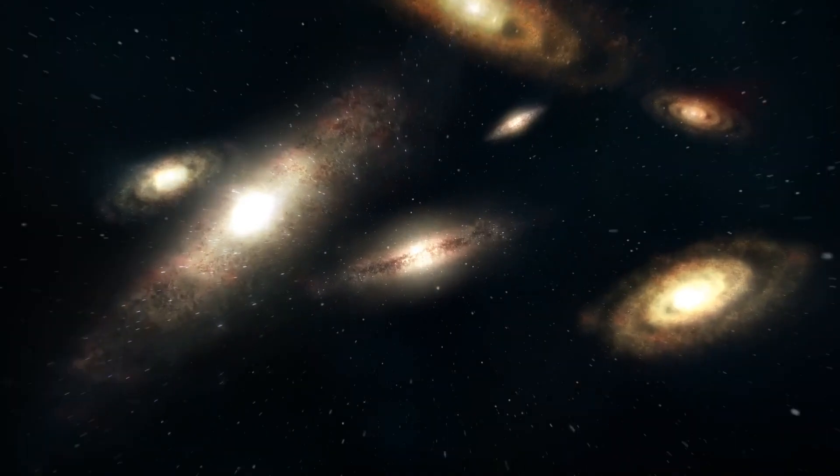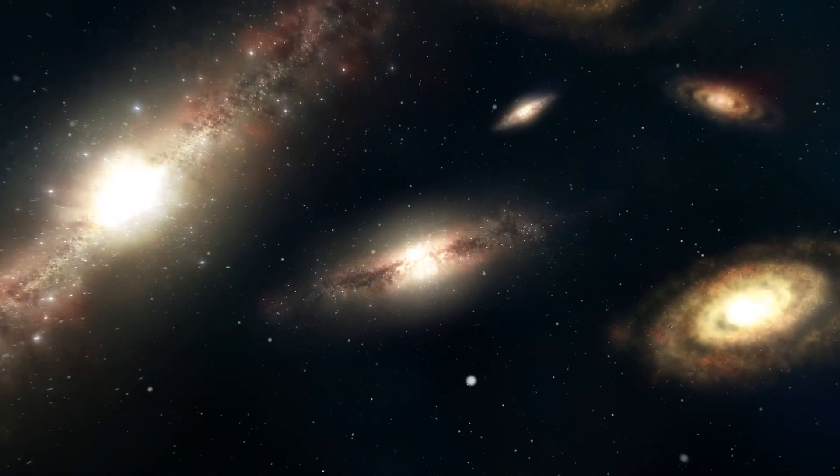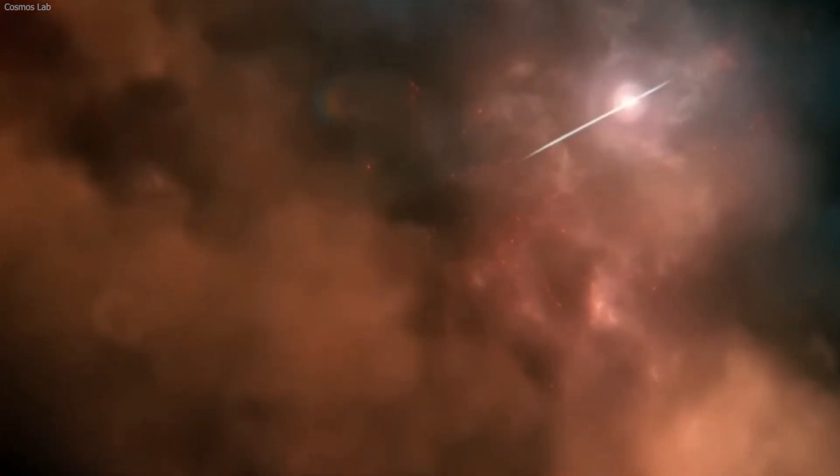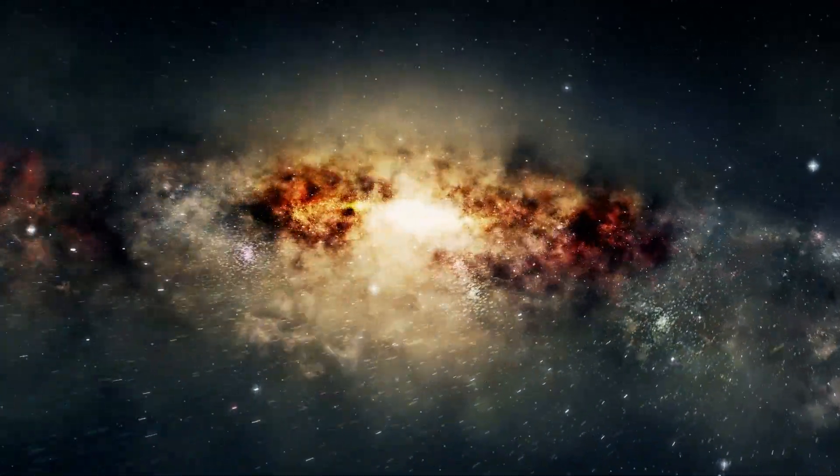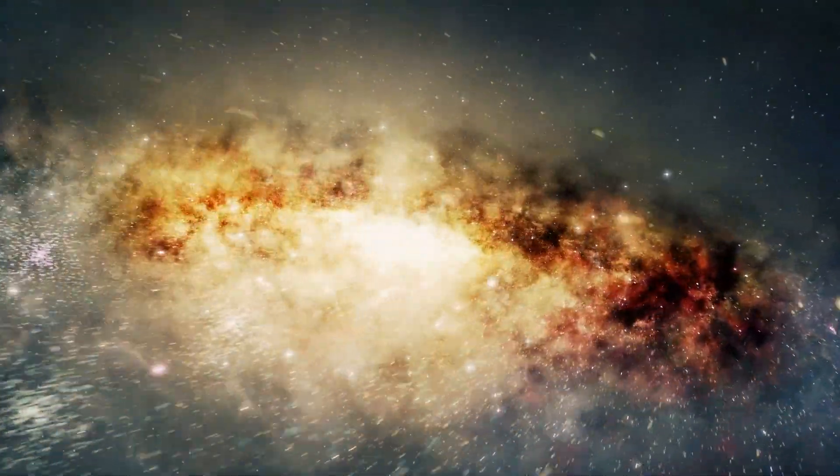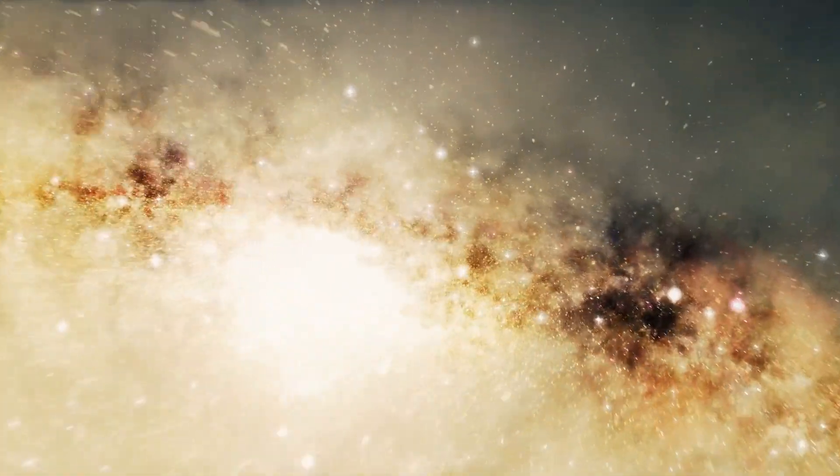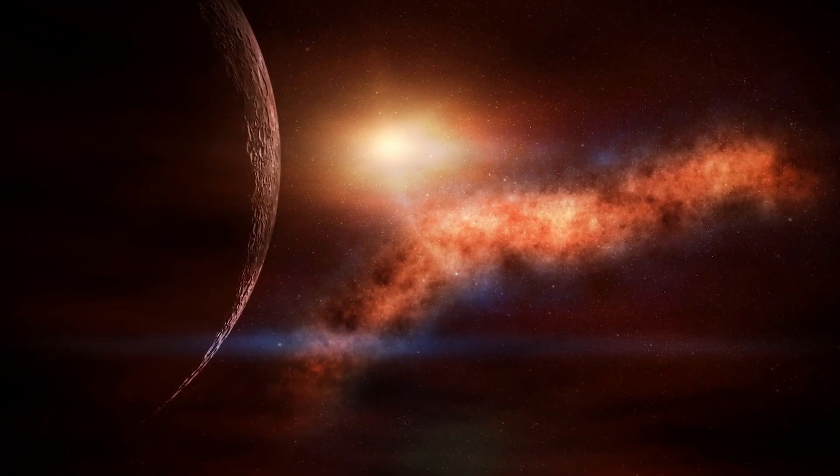The supergiant loses one solar mass every 10,000 years and ejects this mass in the form of a nebulous cloud. The spread of material is so abrupt and scattered that this nebulous cloud is about 250 times larger than the star itself.